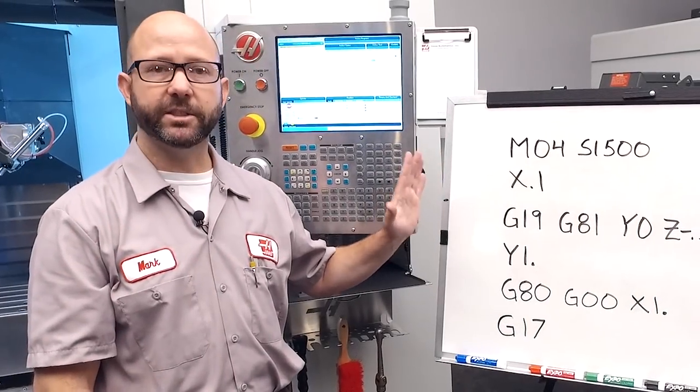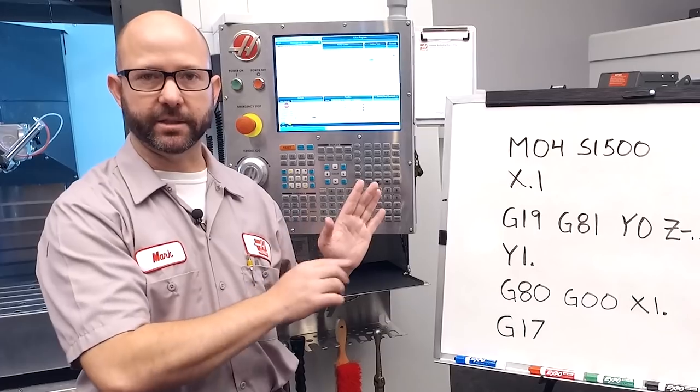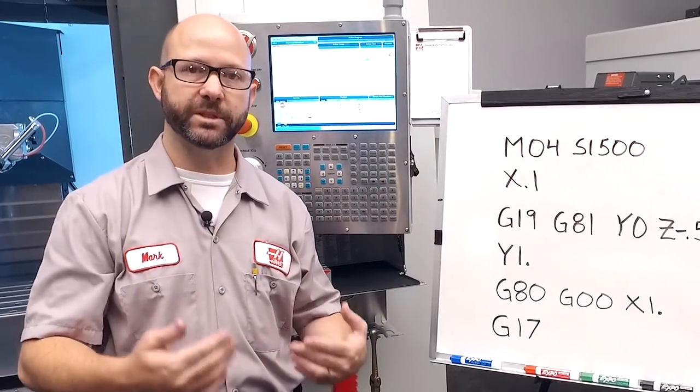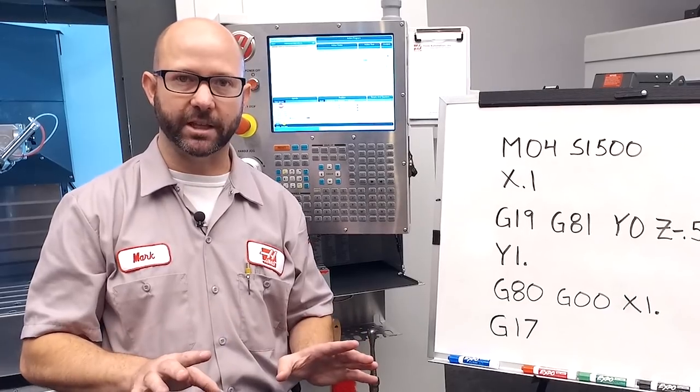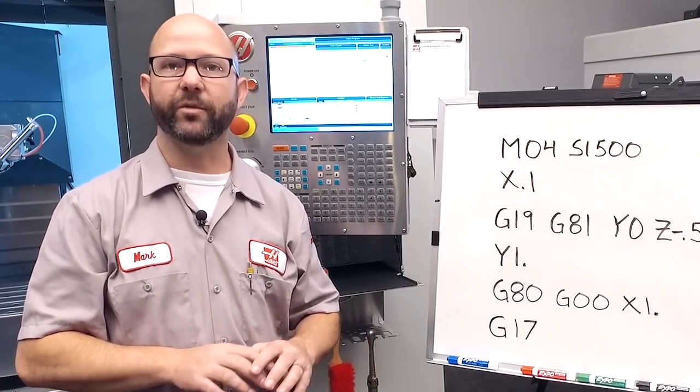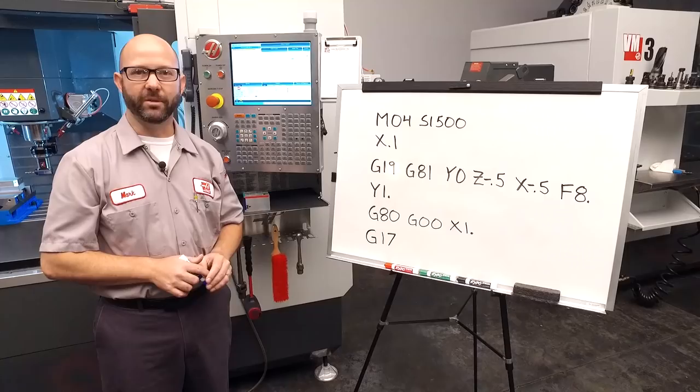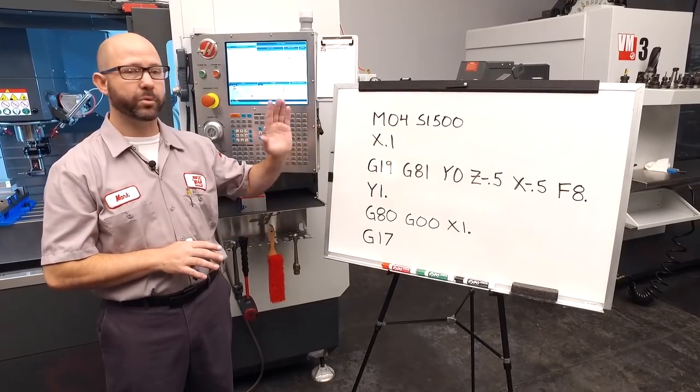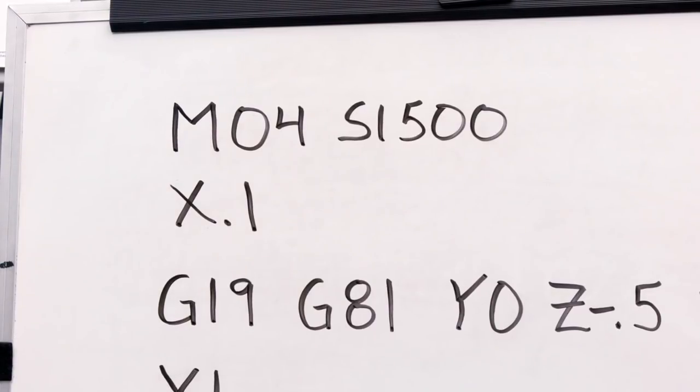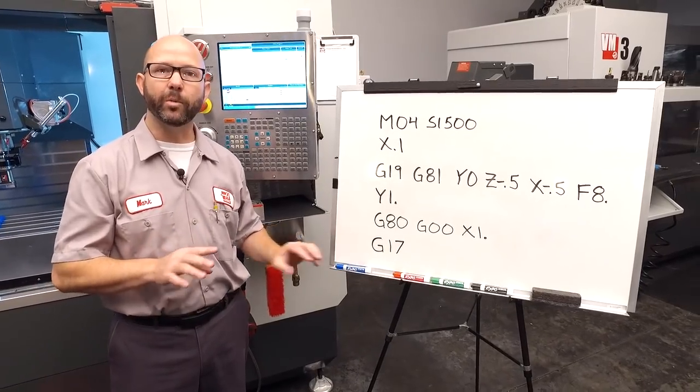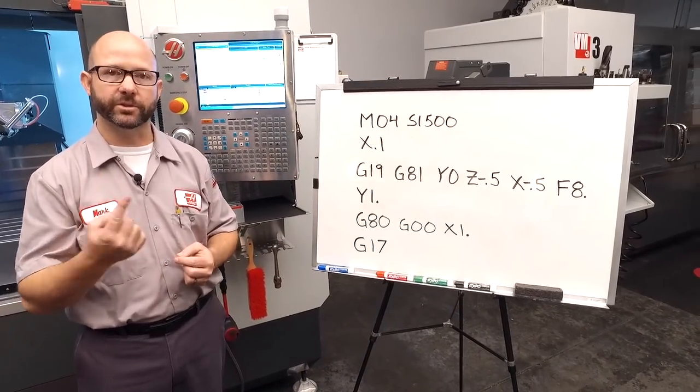Now this program is going to drill along the X axis moving to our left. Now we've got proof programs in our bonus material, so be sure to stick around to the end of the video. Click on today's bonus content. We've got programs that drill and tap in every direction just for you. Okay, here's a simplified version of our program. Right off the bat, we notice that I'm using an M4 and not an M3 to start my spindle.